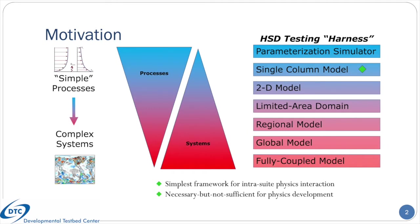The motivation for creating this model is twofold. First, given the incredibly complex nature of NWP models, there is a need to test its various components using a spectrum of simpler models. The concept of a hierarchical testing harness for an NWP system might look something like the collection of boxes on the right. Simpler models excel at investigating issues on the physical process level, whereas more complex models are required for testing on the systems level. A single-column model is one necessary-but-not-sufficient tool within the hierarchical testing framework, and is the simplest way to test a group of physics schemes together as a suite.